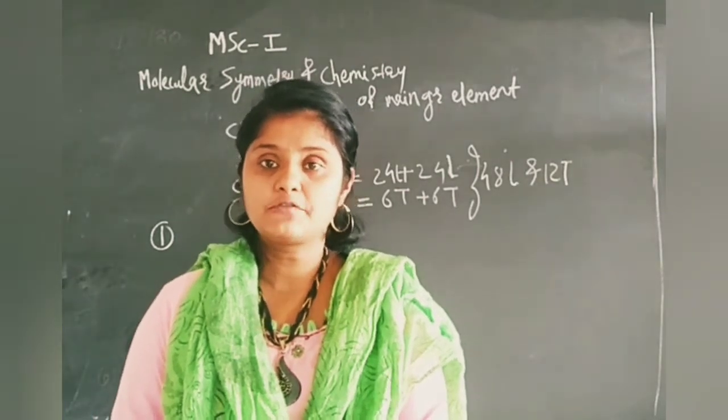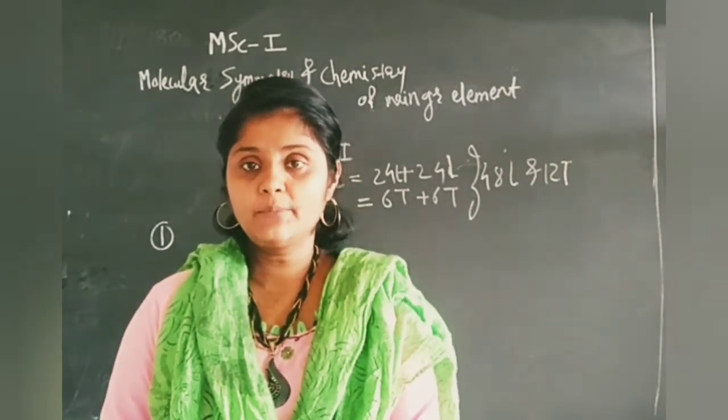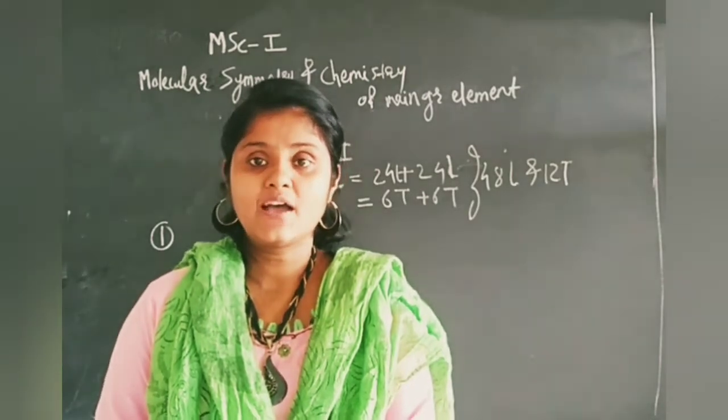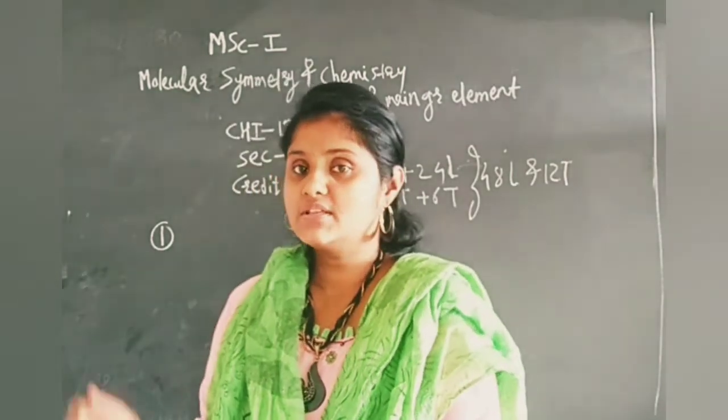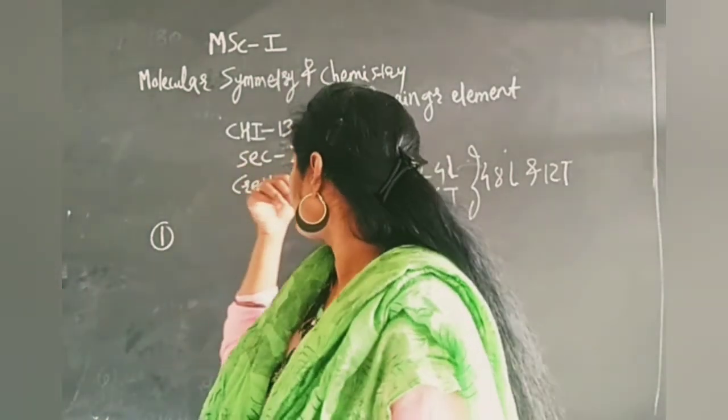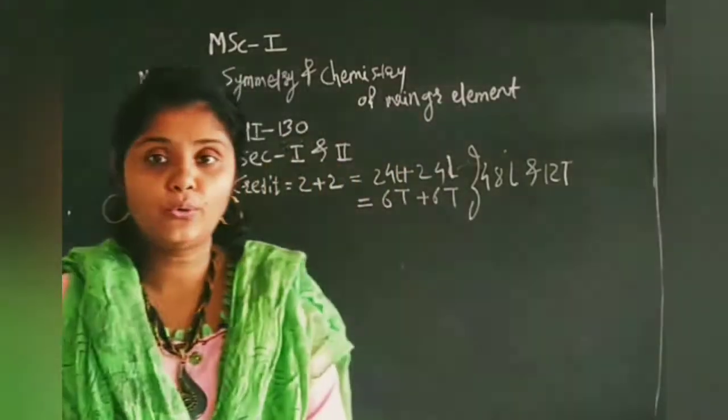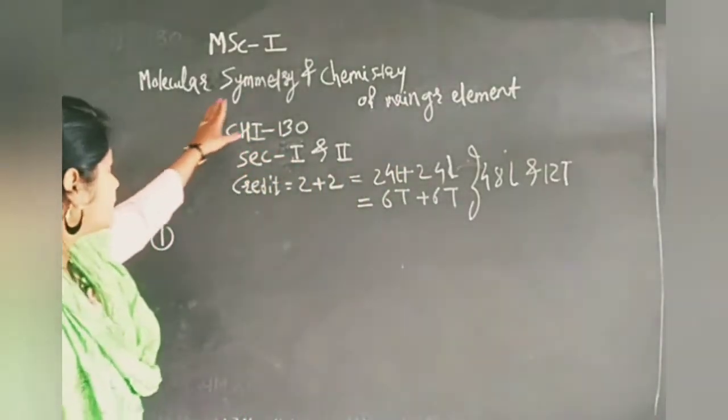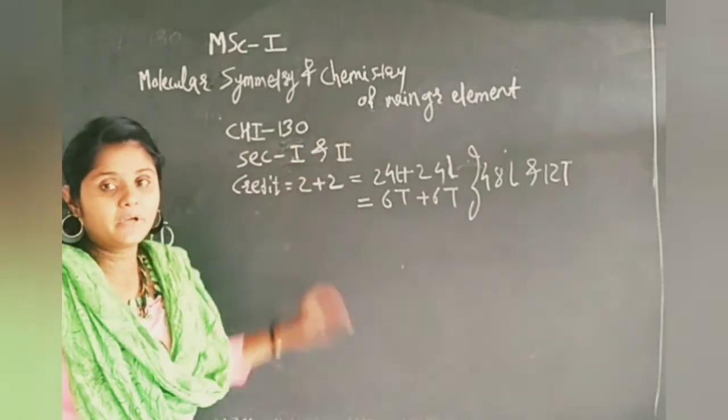In this MSc first year, you are studying four theory courses. Out of that, one course is CHI 130. The course name is Molecular Symmetry and Chemistry of Main Group Elements.